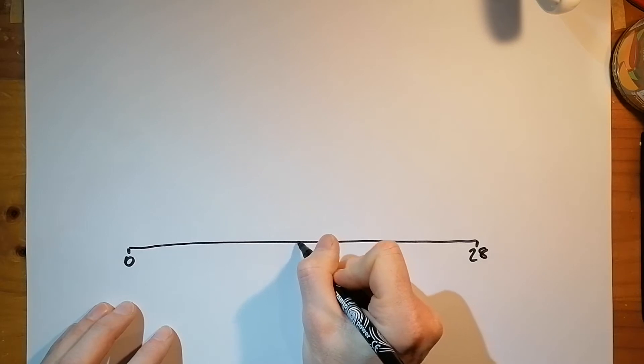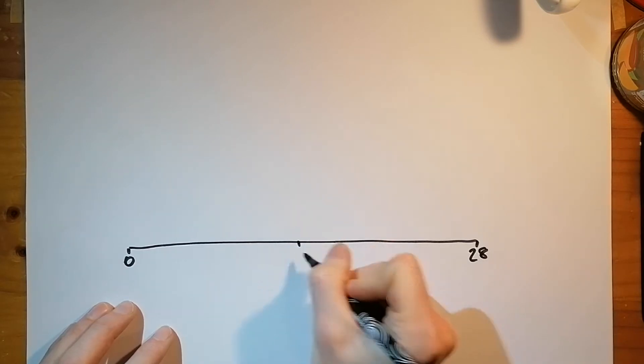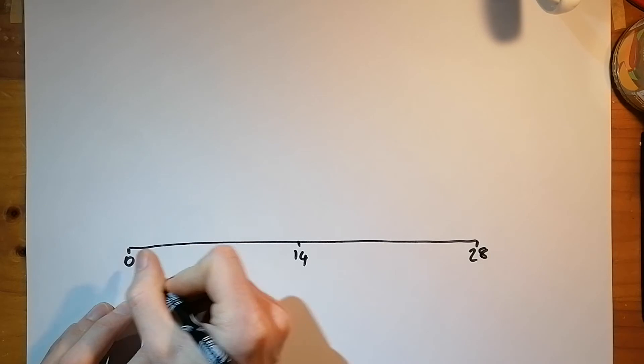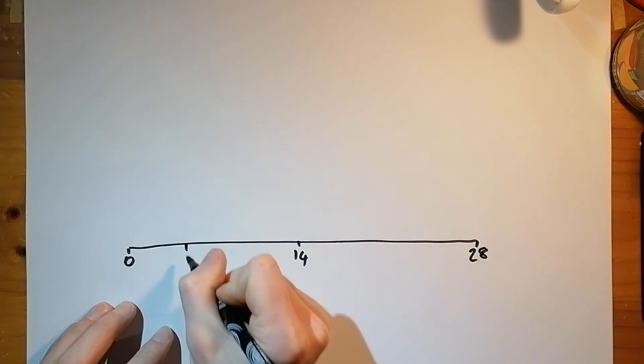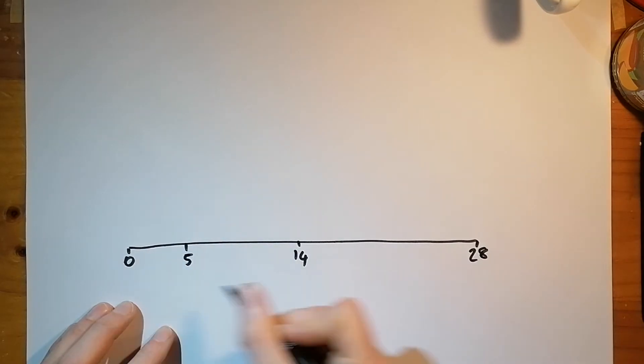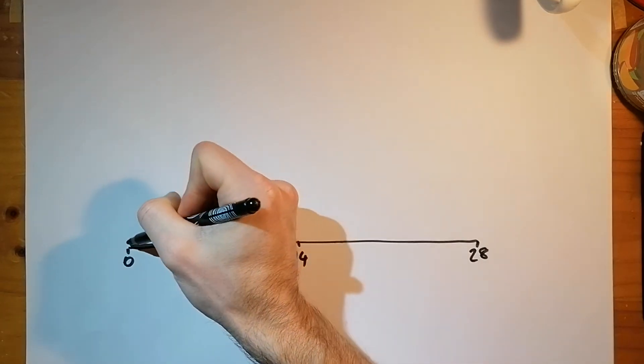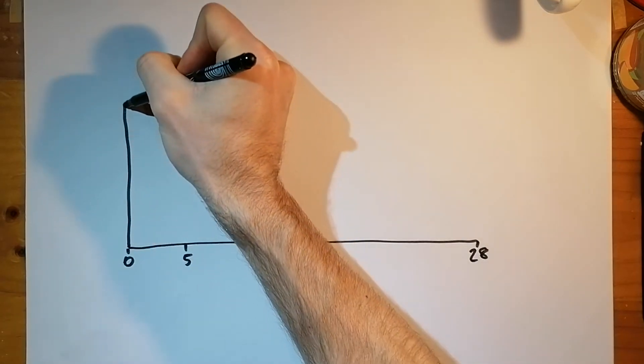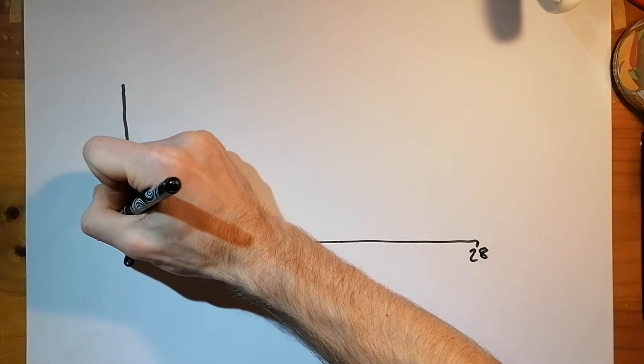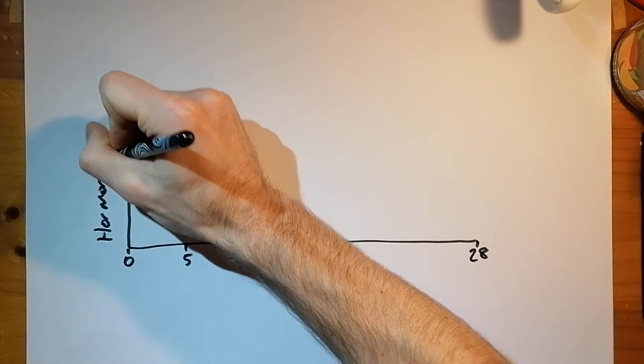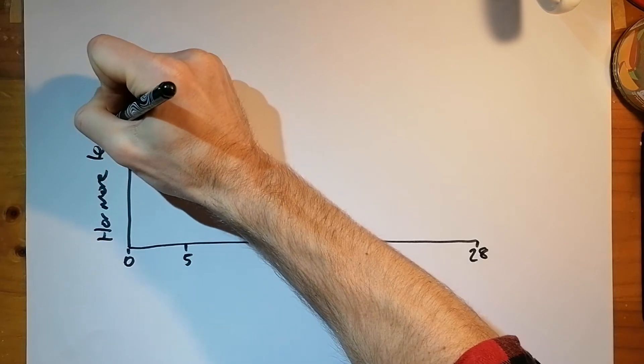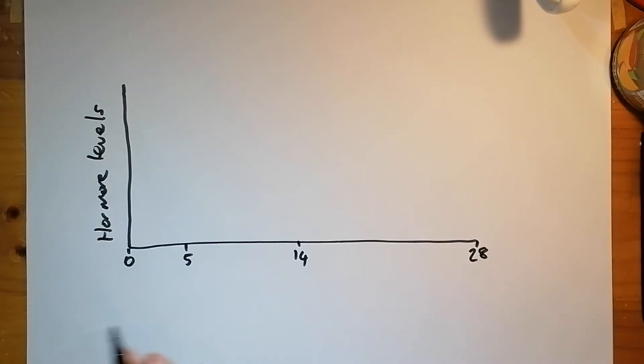And halfway between 0 and 28 would be 14. And then one more number of days I'm going to add on that timeline is 5. So you've got 0 to 5 days, 5 to 14 days, then 14 to 28 days. Up the side of our graph we're going to put hormone levels. And these are relative hormone levels of the four hormones that we've just discussed. And at the bottom of our graph we're going to put events.